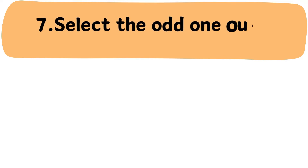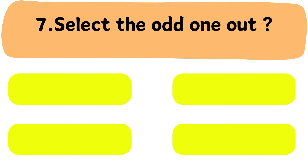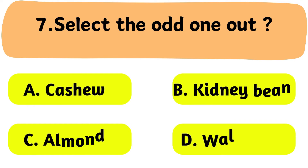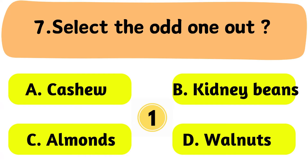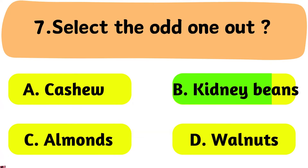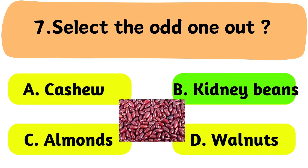Question No. 7: Select the odd one out. The correct answer is Option A.